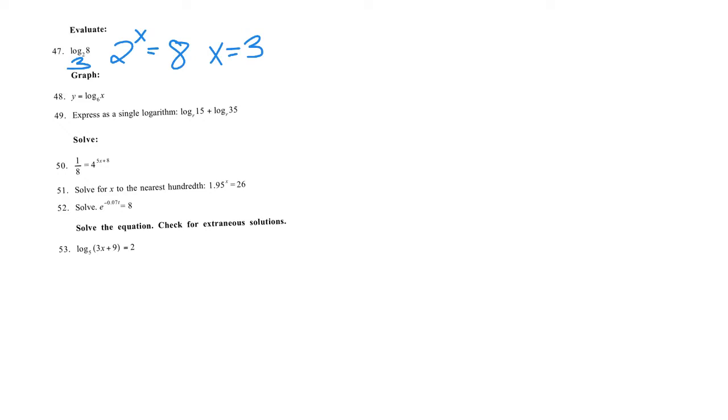Graph the log base 6 of X. The log has a horizontal asymptote, and I'm going to make a table using 6, 1, and one-sixth. The base, 1, and 1 over the base. And when I do the log base 6 of 6, I get 1. When I do the log base 6 of 1, I get 0. And when I do the log base 6 of one-sixth, I get negative 1.